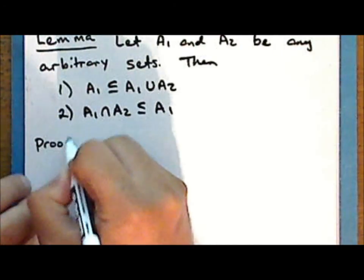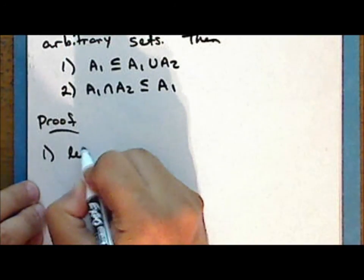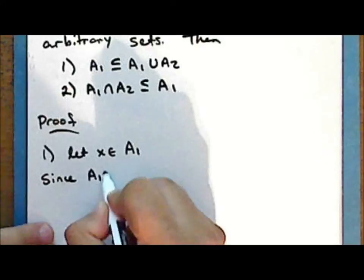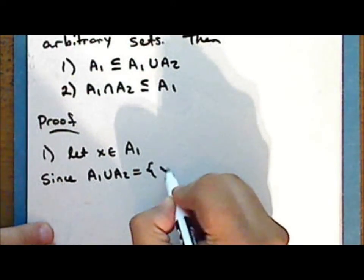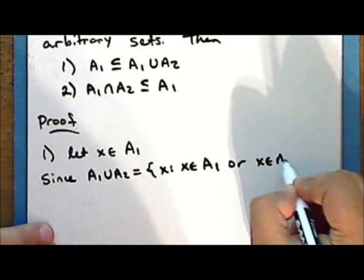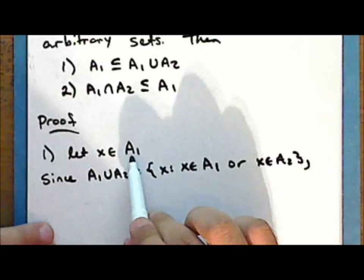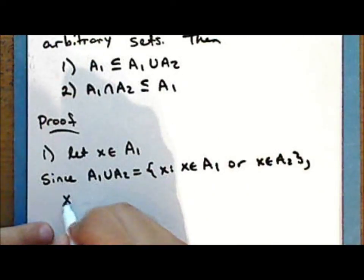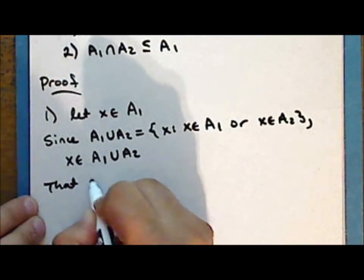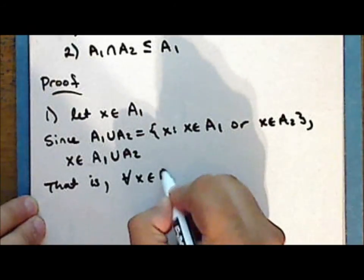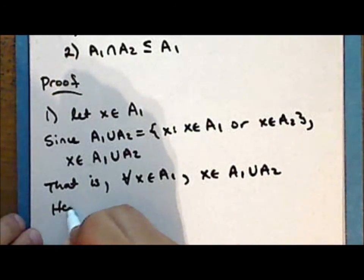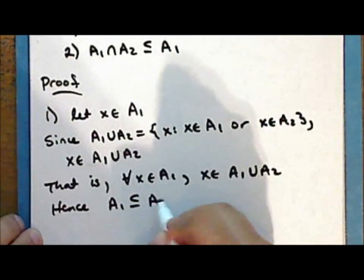Proof, first statement. Let x be any arbitrary element in the set A₁. Since the union of A₁ with A₂ is the set of all elements such that that element is either in A₁ or A₂, it is true that given an element in A₁, that element is in this set. So the element is in the union of A₁ with A₂. That is, for every element in A₁, that element is also in the union of A₁ with A₂, and hence A₁ is a subset of the union of A₁ with A₂.